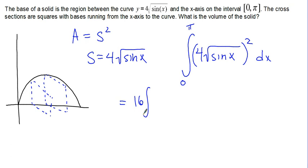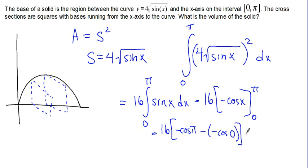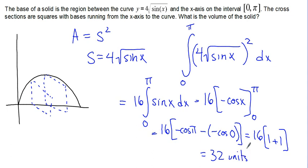We can pull the 16 out, so we'll have 16 times the integral from 0 to pi of sine X DX. The integral of sine X is negative cosine X, so we have 16 times negative cosine X evaluated from 0 to pi, which gives us 16 times (negative cosine pi minus negative cosine of 0). The cosine of pi is negative 1, so negative negative 1 is 1. The cosine of 0 is positive 1, so we have minus negative 1, which gives us plus 1. So we end up with 16 times 2, or 32.